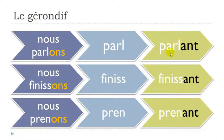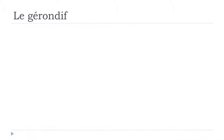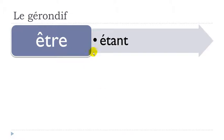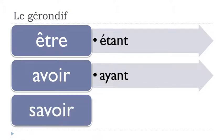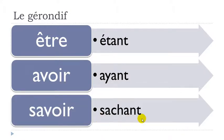To review: nous PARLONS → PARLANT; nous FINISSONS → FINISSANT; nous PRENONS → PRENANT. Of course we have exceptions, and the good news is there are only three. The first is ÊTRE — to be — which gives ÉTANT. AVOIR — to have — gives AYANT. And SAVOIR — to know — gives SACHANT. Only three exceptions, which is a good thing in French because normally we have more.